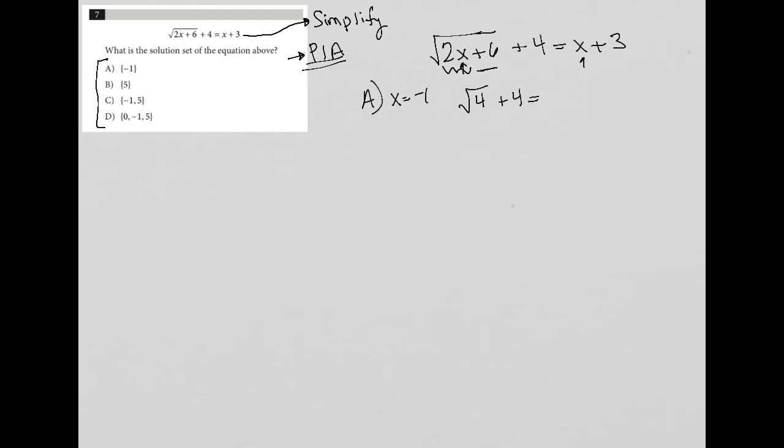So I'd have the square root of 4 plus 4 equals—again, if I plug negative 1 here for this x, I'd have negative 1 plus 3, which is positive 2. The square root of 4 is 2. 2 plus 4 does not equal 2. So answer choice A is gone.